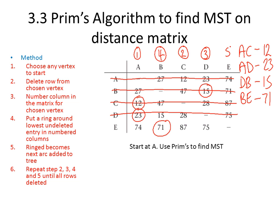That's our fifth one, so we put a 5 above E. If we're at E, we obviously can't travel to E, so we cross out the row. As you can see now, the whole thing has been finished because all rows have been crossed out. We then add up the numbers: 12 + 23 + 15 + 71 = 121. So the minimum spanning tree distance is 121. That's Prim's algorithm to find a minimum spanning tree on a distance matrix.